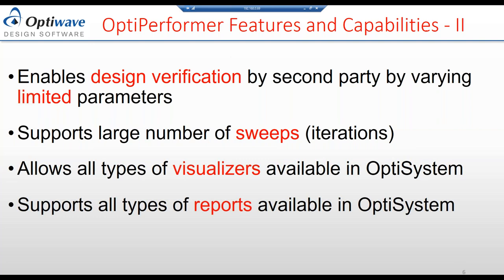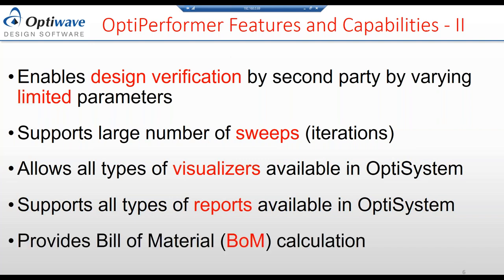In OptiPerformer, you also have access to reports. These reports must first be created in OptiSystem and can be in graph, Excel data, or text format. Once you run the calculation in OptiPerformer, you can view the reports and see the results. OptiPerformer also provides a bill of material calculation as one of its features.